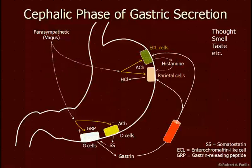There are three phases of gastric secretion. The cephalic phase, which comes from the brain, is triggered by thinking about food, smelling food, or putting food in your mouth and tasting it. These things trigger gastric secretion even before food enters the stomach. The parasympathetic nervous system then triggers the enteric nervous system to release ACH on the ECL cells and parietal cells to trigger acid secretion.